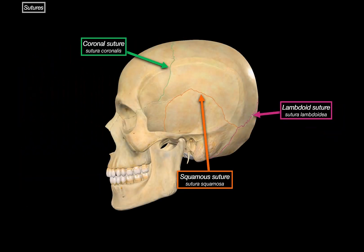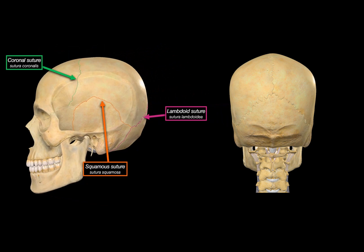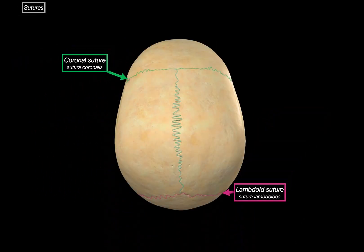In the lateral view, the coronal suture is even clearer. Just behind it, you'll spot the squamous suture, which connects the parietal bone to the temporal bone. And further back, there's the lambdoid suture, running between the parietal bone and the occipital bone — it looks almost like an upside-down V from the posterior view. And superiorly, we can see the sagittal suture running right down the midline, connecting the two parietal bones.